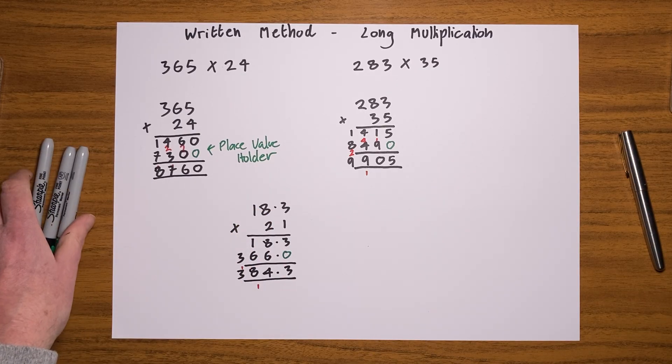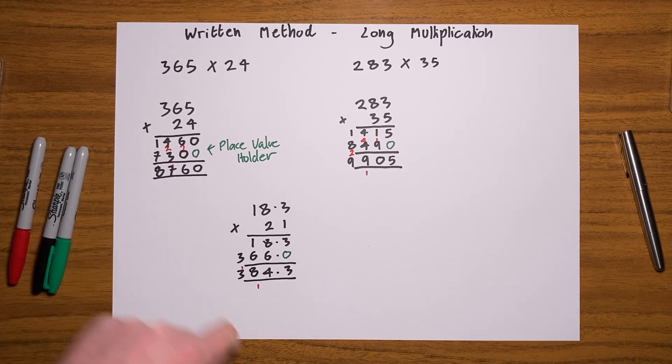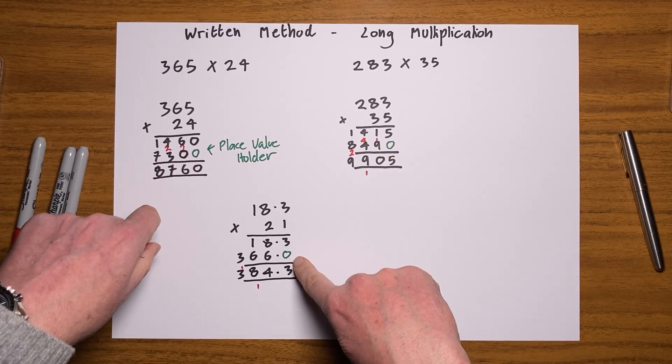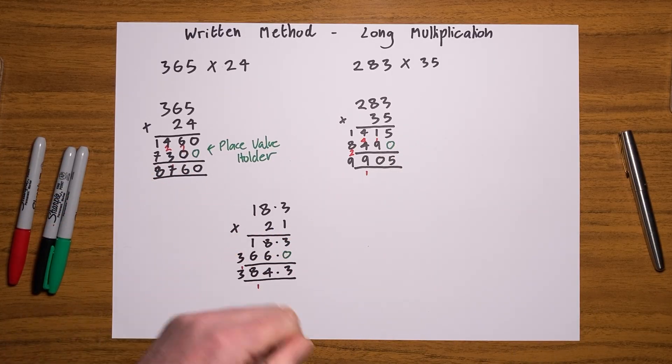So there you go, written method long multiplication. Essentially you're doing two rows of short multiplication. Don't forget the place value holder. All the best with that, and see you again.